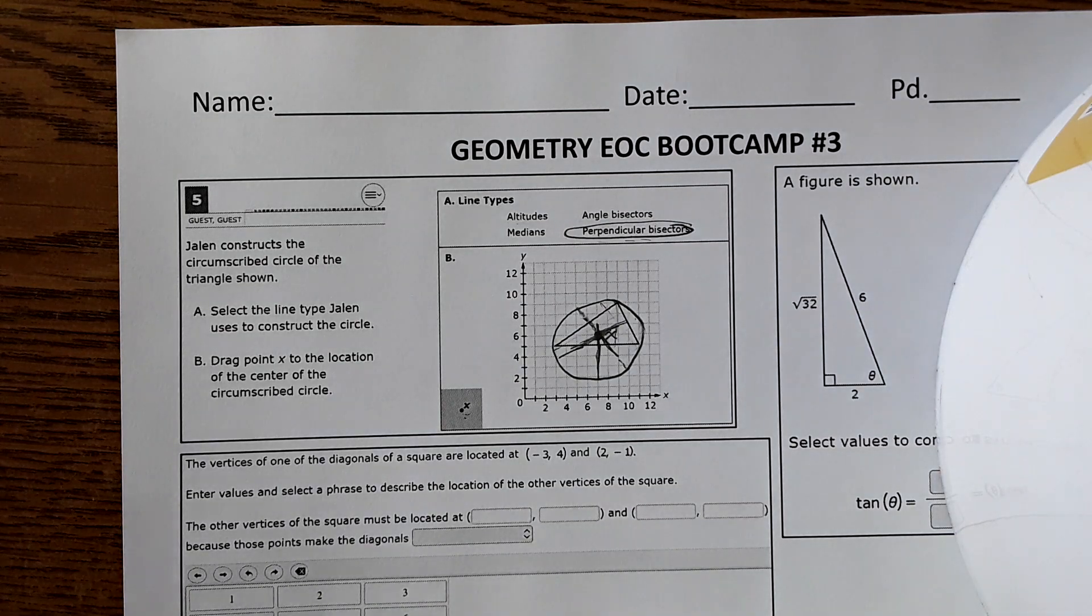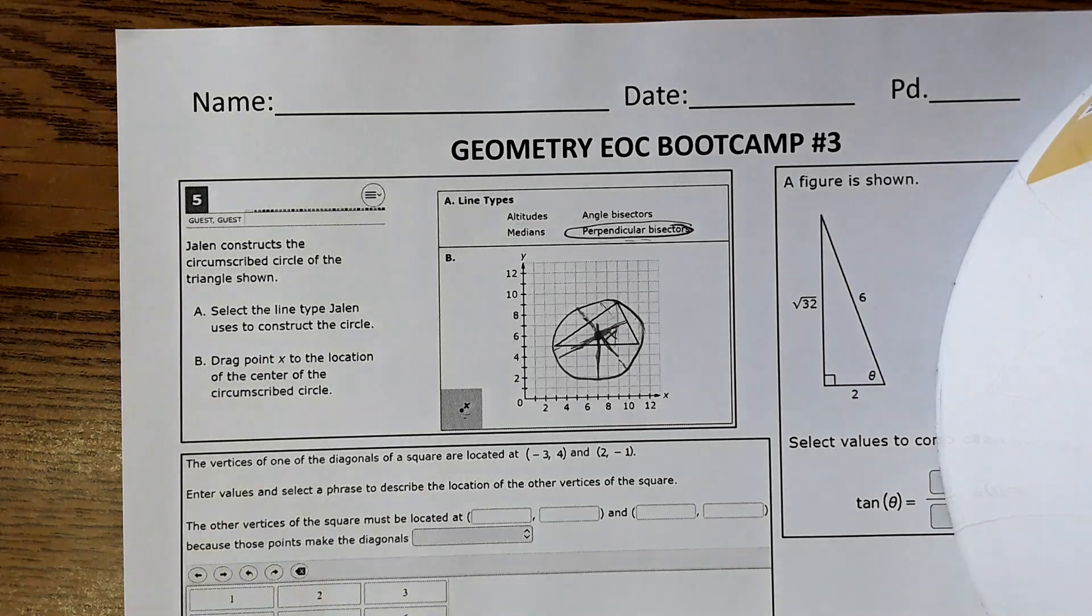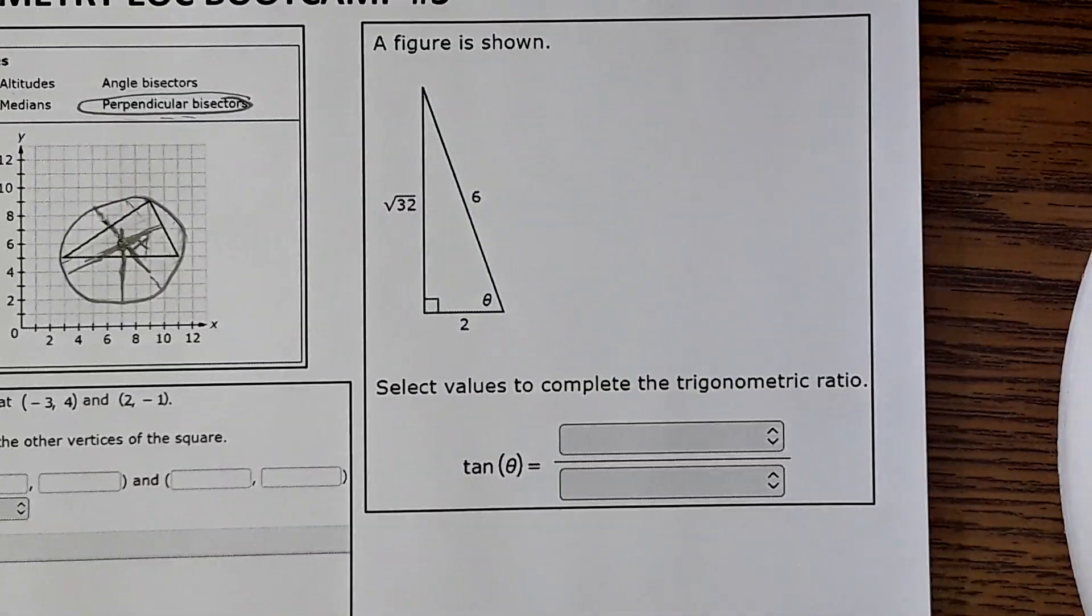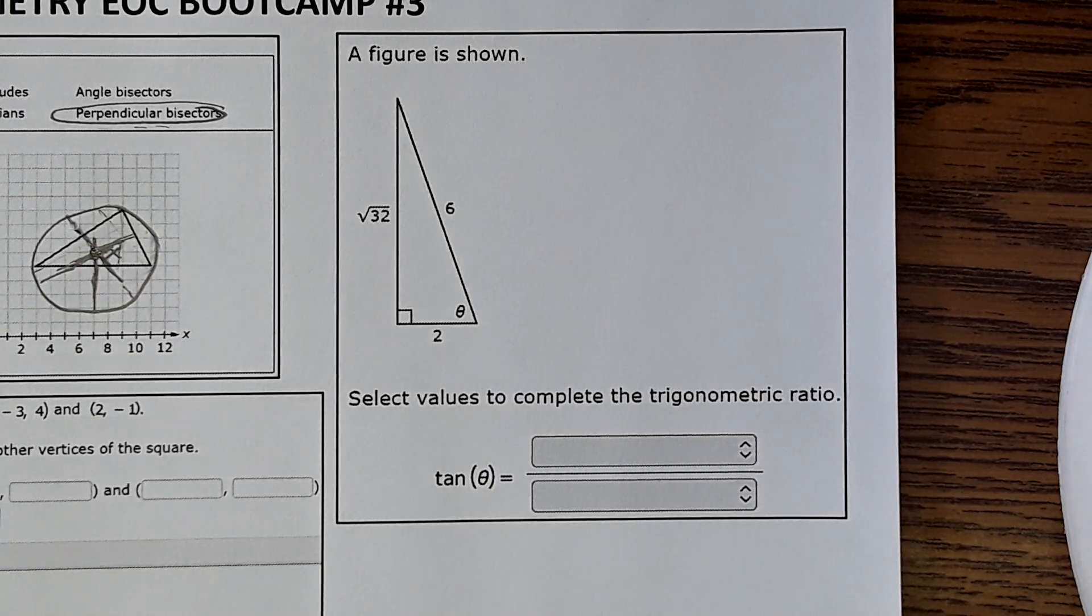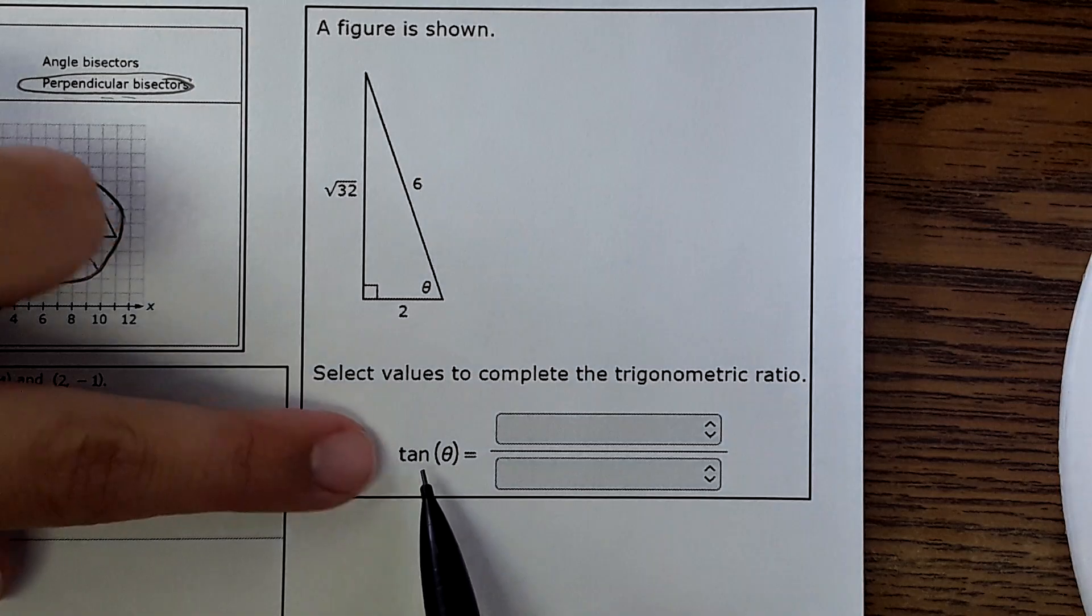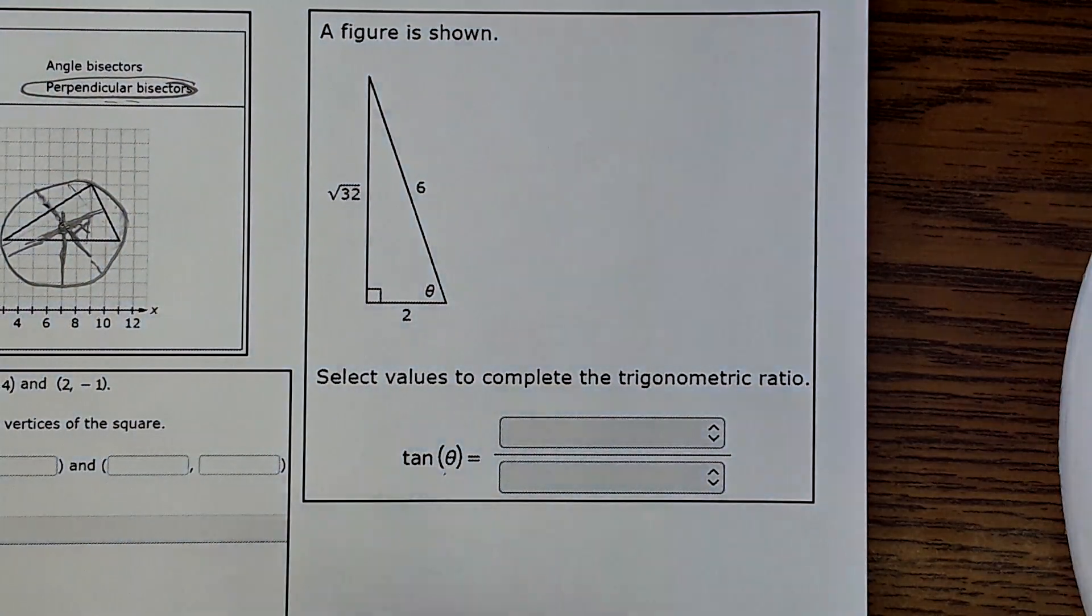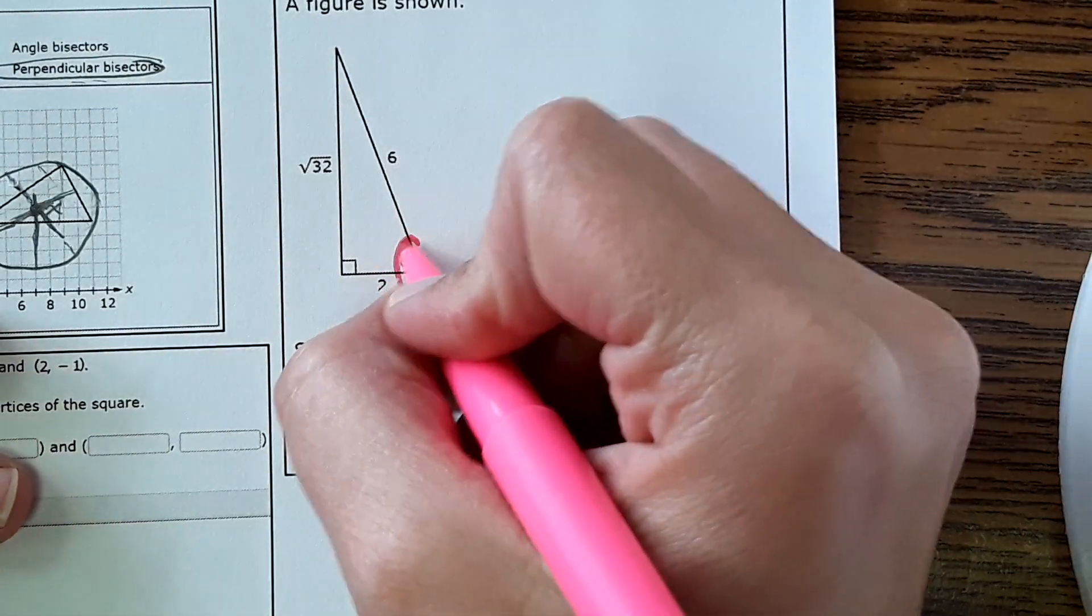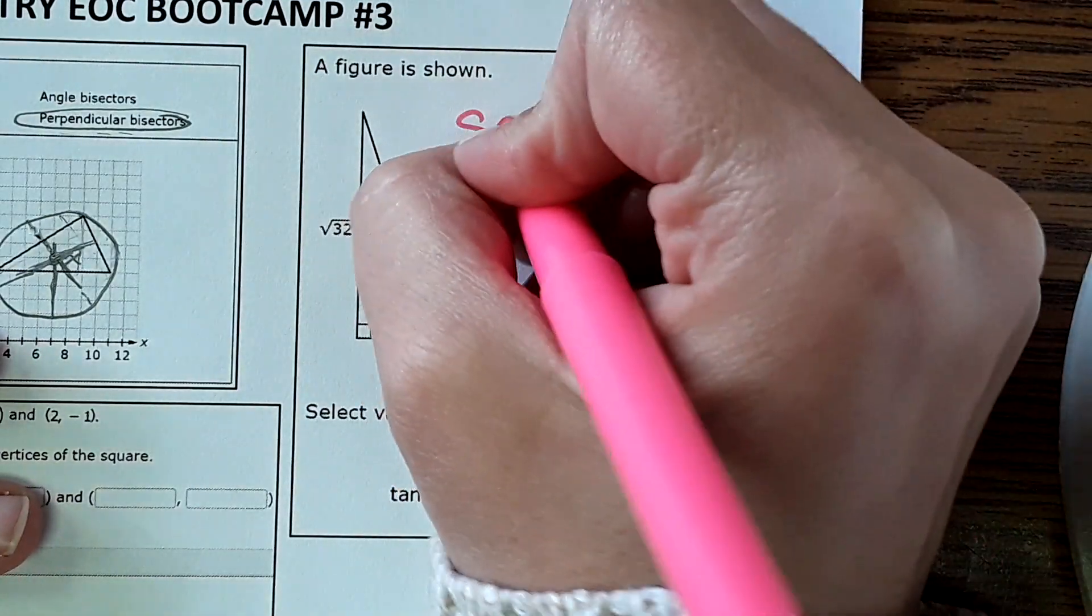Okay, it's a little easier from here on out. Next one. This one is actually a really easy one as long as you know what they're looking for. It says a figure is shown. Select the values to complete the trigonometric ratio. And it says tan of theta. So theta, it shows it right here. That's our designated angle right here.